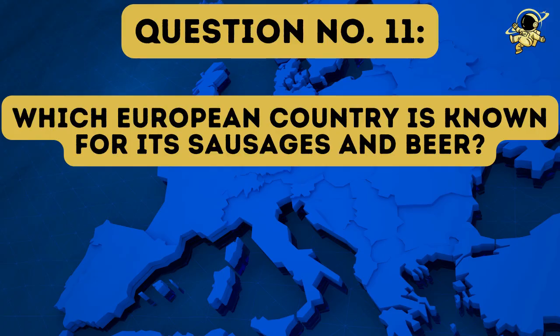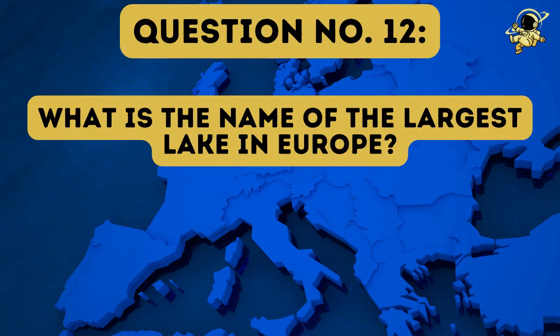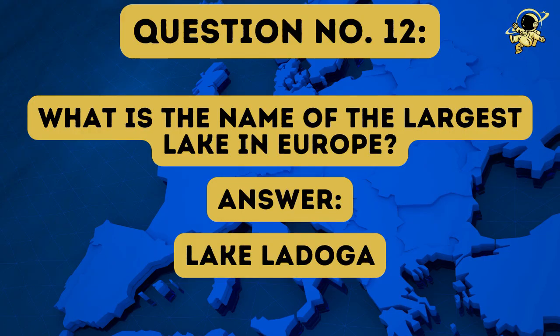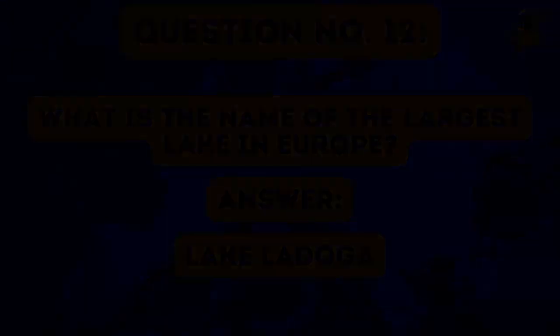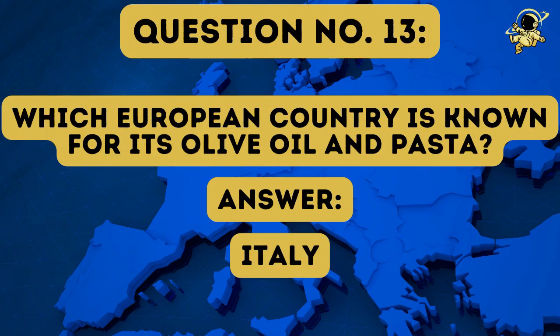And then we come to question number eleven: Which European country is known for its sausages and beer? And the answer to question number eleven is Germany. And then we come to question number twelve: What is the name of the largest lake in Europe? And the answer to question number twelve is Lake Ladoga. It's also in Russia. And then we come to question number thirteen: Which European country is known for its olive oil and pasta? And the answer to question number thirteen is of course Italy.